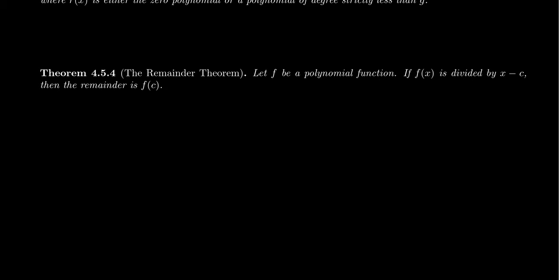Let f be a polynomial function. If f(x) is divided by x minus c, then the remainder is going to be f(c). So dividing f(x) by x minus c gives us the remainder is going to be f(c).